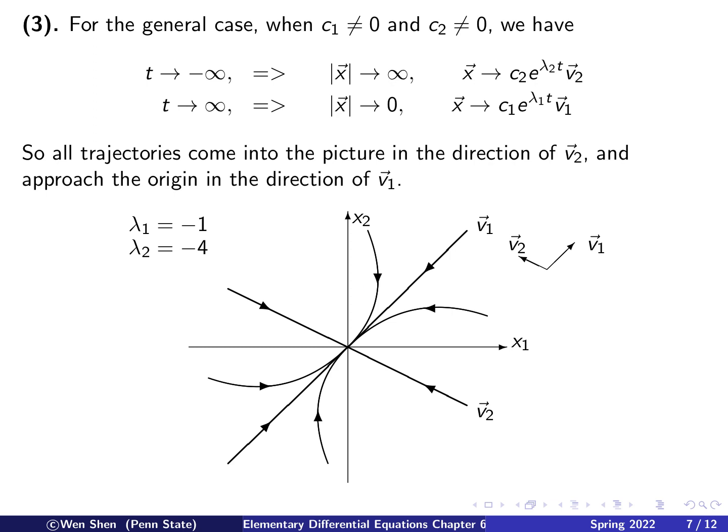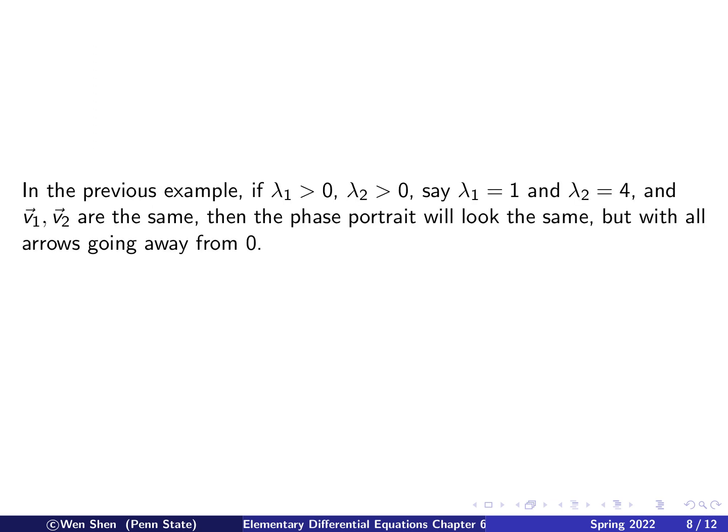We observe that all arrows are pointing towards the origin, the critical point. The behavior is determined by the direction of the eigenvectors, the values of lambda 1 and lambda 2, and which one has a bigger absolute value. As a remark: if instead we had lambda 1 equals 1 and lambda 2 equals 4 with the same eigenvectors, the phase portrait would look the same but with all arrows going away from the origin.